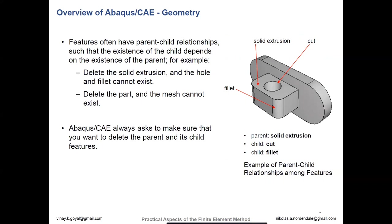For geometry, a lot of the features typically have a parent-child relationship, such that the child is dependent on the existence of the parent. For example, if you were to delete the solid extrusion, the hole and the fillet can't exist because they're part of that extrusion. Similarly, the mesh is dependent upon the part — so if you delete the part, the mesh goes with it. In this example, the solid extrusion is the parent, and the cut and fillet are the children. Abaqus always asks to make sure that you want to delete the parent and its child features.